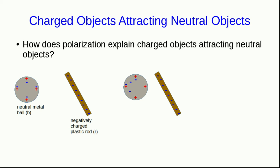The result, now, is that the side of the ball facing the rod is overall positively charged, and the side facing away from the rod is overall negatively charged. The ball is polarized.